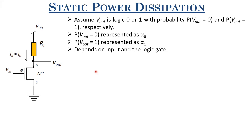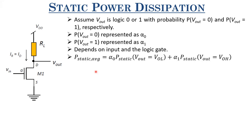The average static power dissipation is simply given by alpha zero — the fraction of time the output is at logic level low — multiplied by the static power dissipation when Vout = VOL, plus alpha one — the fraction of time the output is high — multiplied by the static power dissipation when Vout = VOH.